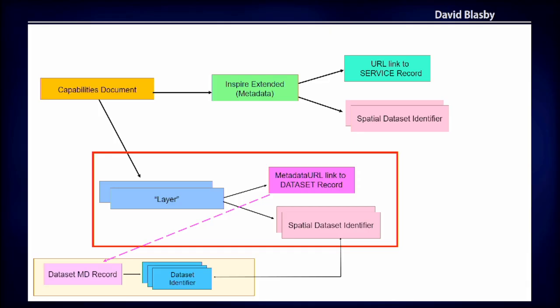In the layer section, each layer might have a metadata URL link — a direct link to a dataset document that you can download using the techniques we talked about earlier. A big note: the document this points to is probably not one you've already harvested, because you probably harvested from a higher-level catalog like a country-level catalog, and these are pointing to regional catalogs. Those two metadata records will almost certainly be different. Each layer also has a spatial data set identifier that links back to a dataset record via an ID.